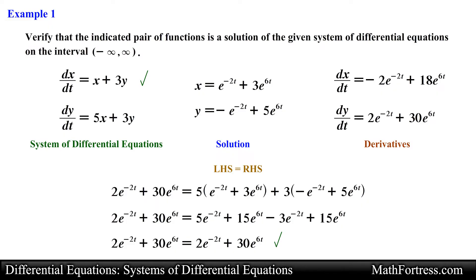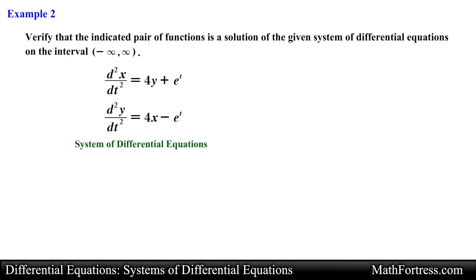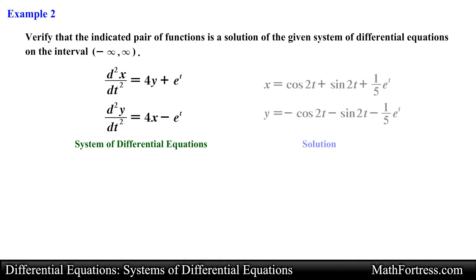The process is very similar to the way we verified solutions to differential equations. In this case we need to verify all the equations within the system. Let's go over the final example. The system of differential equations is: the second derivative of x with respect to t equals 4y plus e raised to the power of t, and the second derivative of y with respect to t equals 4x minus e raised to the power of t. The solutions to verify are x equals cosine of 2t plus sine of 2t plus one-fifth times e raised to the power of t.